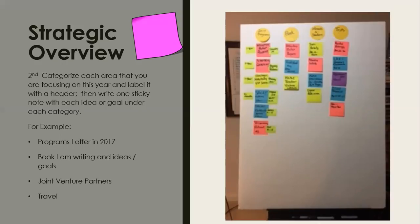I have a sticky note for each one of those programs. Your program or product is what you focus on to bring in the income and revenue you want. I also have categories for the book I'm going to write, joint venture partners, and travel. I'll be adding more categories as there's a lot going on, but this is how I get started and see an overview of what I want to work on.